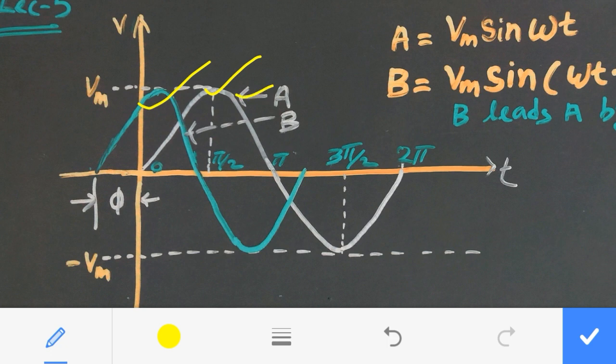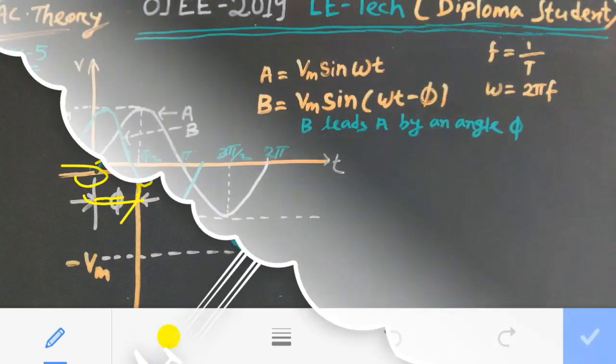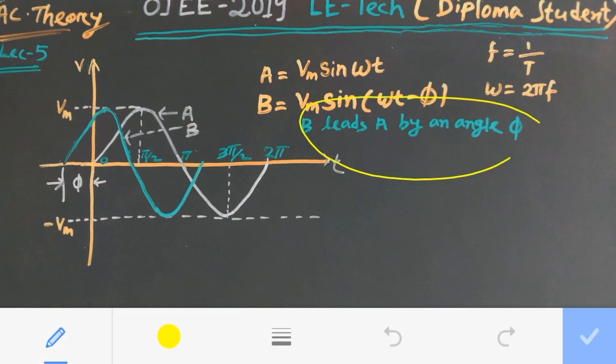Now, waveform A is started from 0 but the green one is started before this angle phi. This green signal, signal B or waveform B, started before signal A. That is, signal B leads A by an angle phi.